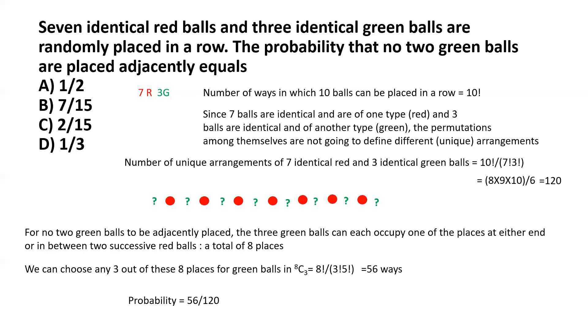If you reduce this fraction and divide both the numerator and the denominator by 8, this comes to 7 by 15. So the correct choice in this case will be option B, 7 by 15.